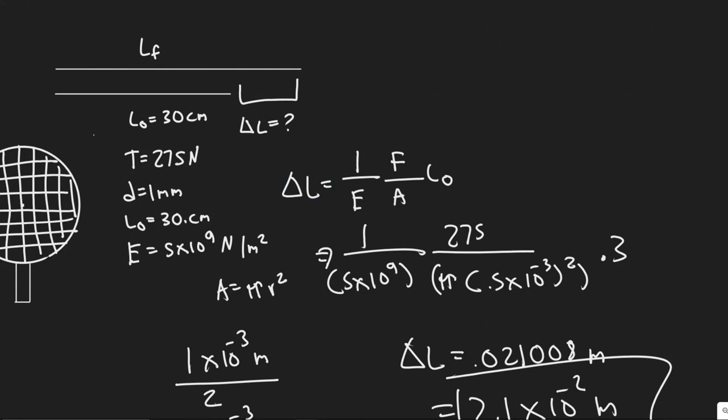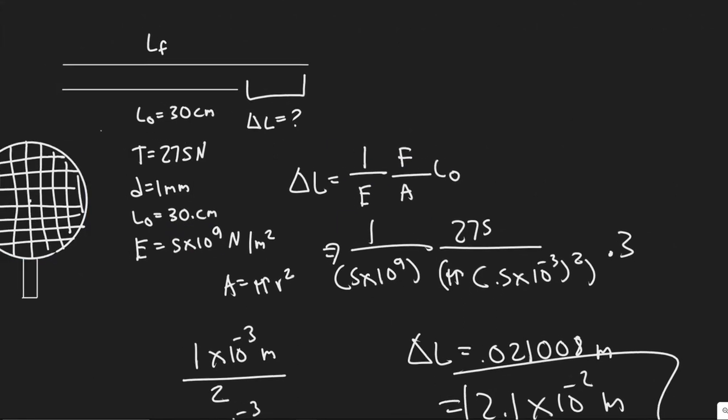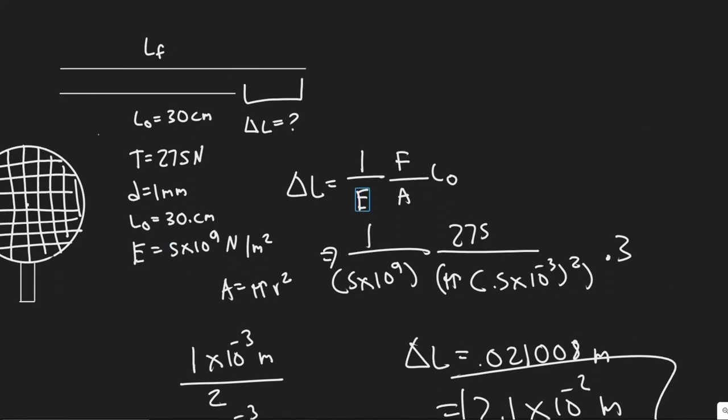Look at delta L. So this is a formula you're going to need to know. So basically, the change in length of some object can be calculated by using this formula: 1 over Young's modulus, which is different for every material. In this case, we use nylon. You can just look in your table for that.